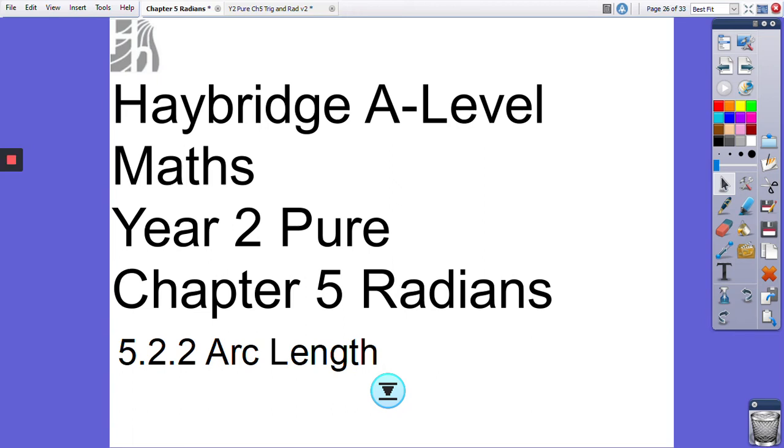Hello and welcome to Haybridge Math Department, A-Level Math, Year 2 Pure. We're working our way through Chapter 5 on radians, the new way of measuring angles. We're going to carry on today with arc length, which is the second part of 5.2, working towards Exercise 5C.